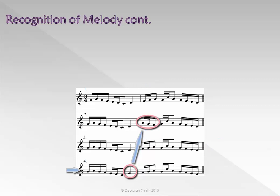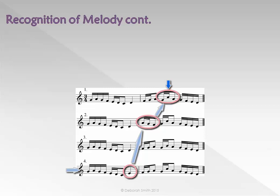Assuming we're continuing, 1 and 3 have the same next note of So, but the note after that is different. Number 1 goes up to Do — you will hear the tonic. Number 3 goes up to Ti, that is the leading note. If you hear it go up to Do and then fall to La, you know it must be number 1. If you hear it only go as far as the leading note, Ti, and fall to La — only a step — then you know it must be 3.